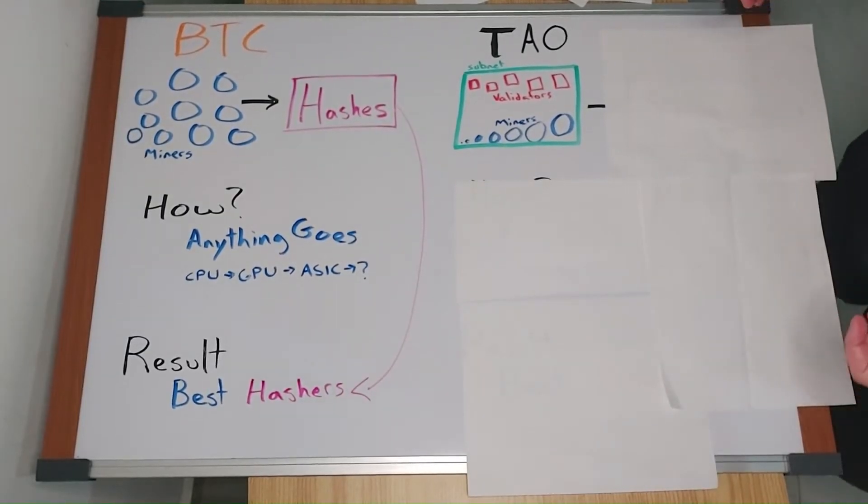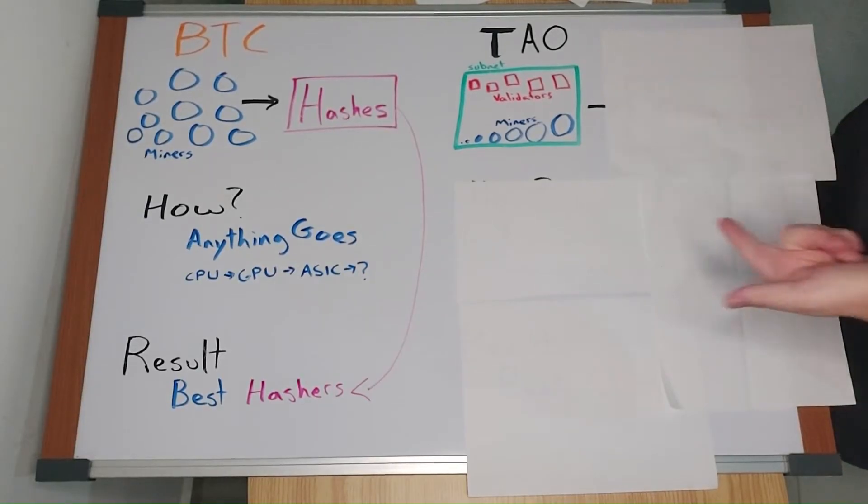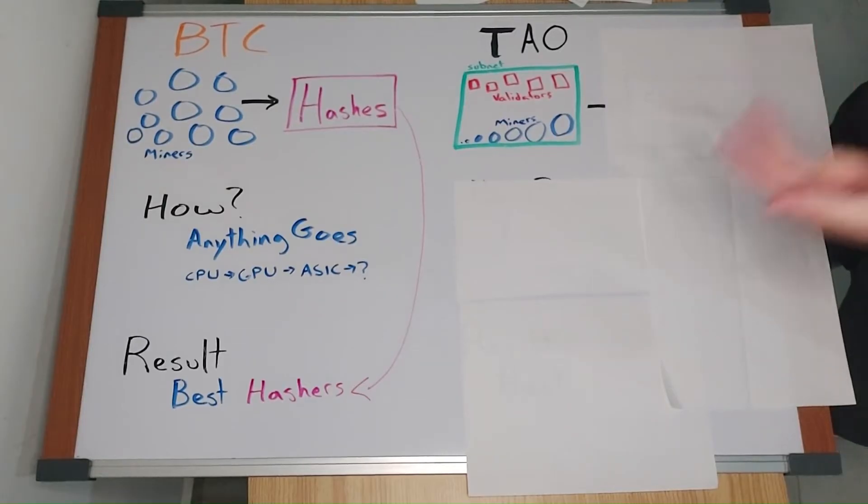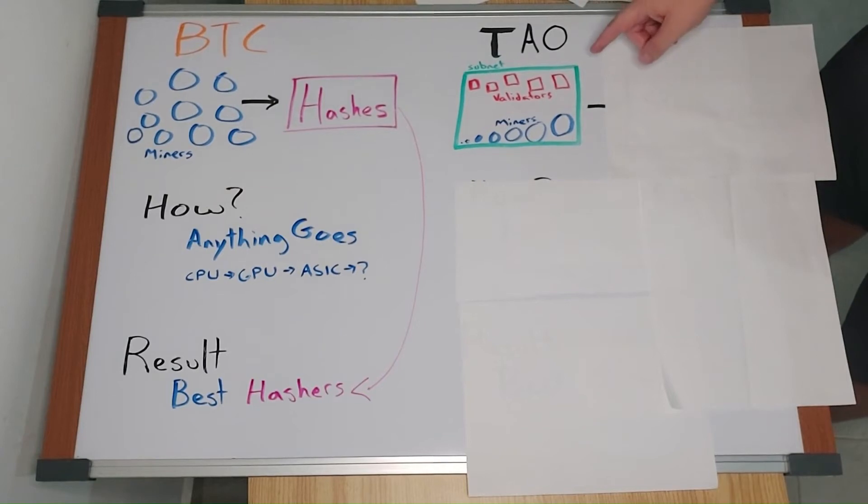Instead of miners guessing a number, some are working on training AIs, some are working on trading, some are working on advertising. Each of these tasks is contained in a BitTensor subnet.